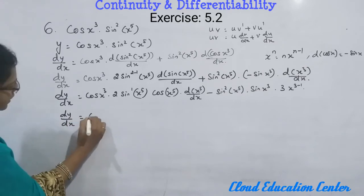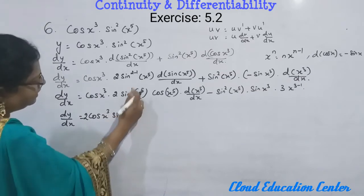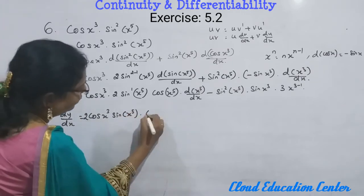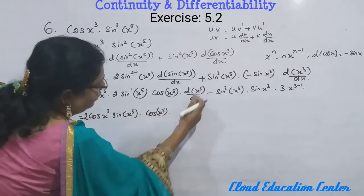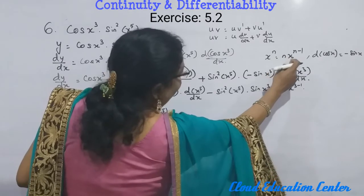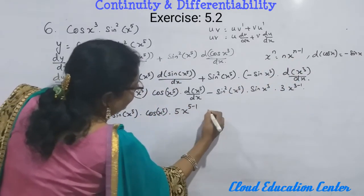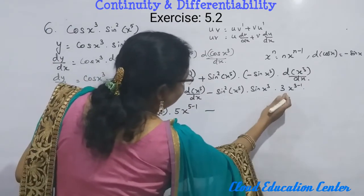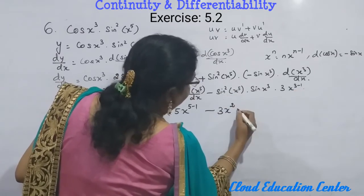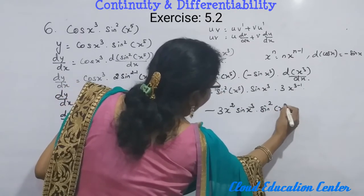dy/dx equals cos(x³) — we bring the 2 to the front. Power 1 need not be written, so we write simply sin(x⁵). Then cos(x⁵). For x⁵, substituting the formula x^n = n·x^(n−1), 5 comes to the front giving x^(5−1). Minus, and 3 comes to the front giving x^(3−1) = x², then sin(x³) and sin²(x⁵).